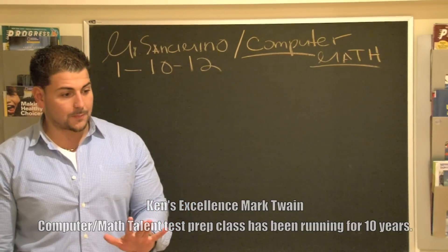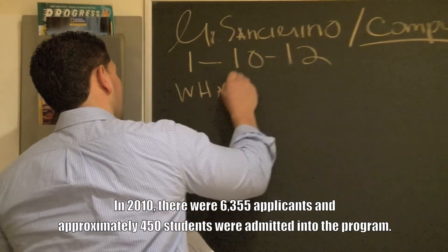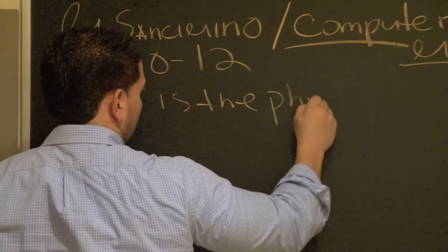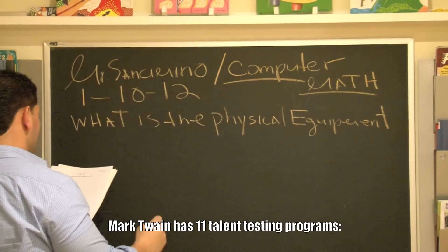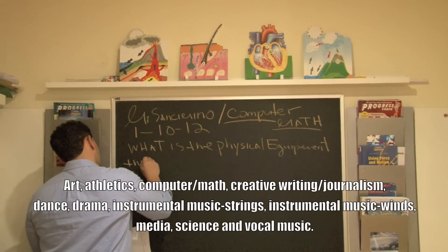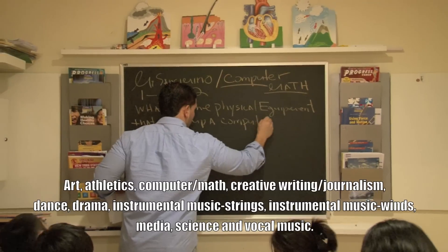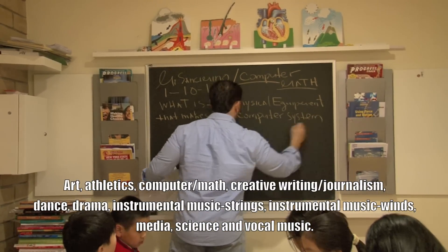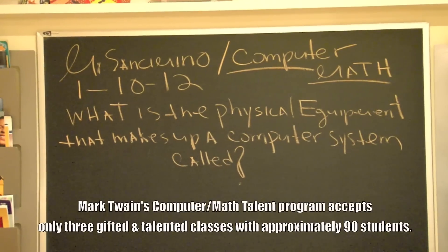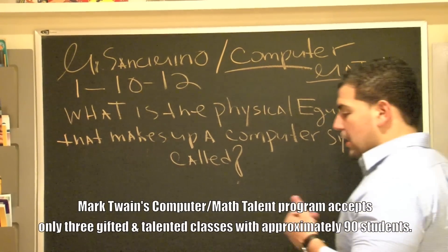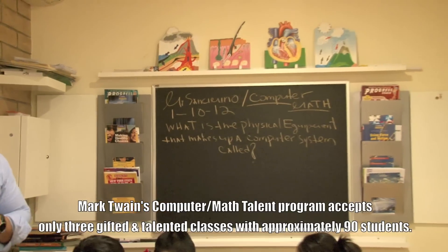So what we're going to do today is kind of a review, but we're also going to learn a couple of things. So the first question we're going to talk about is: what is the physical equipment that makes up a computer system? Write this down. Take a second, write the question down, and then I want you to take a couple of guesses. It's not multiple choice — I want you to brainstorm.